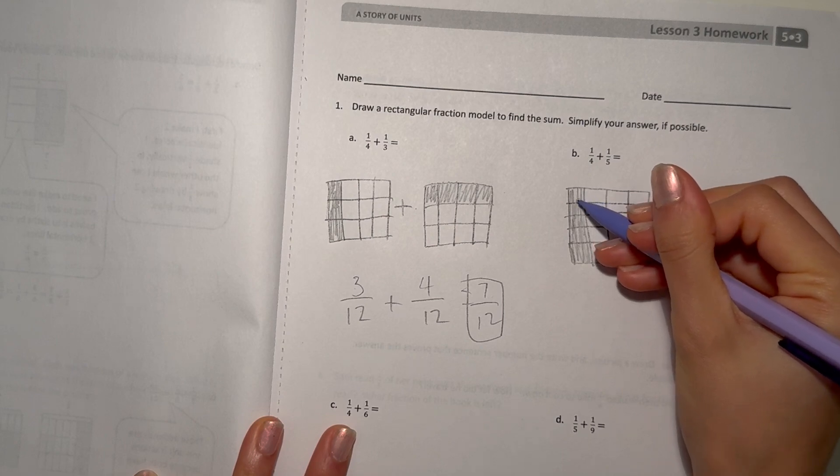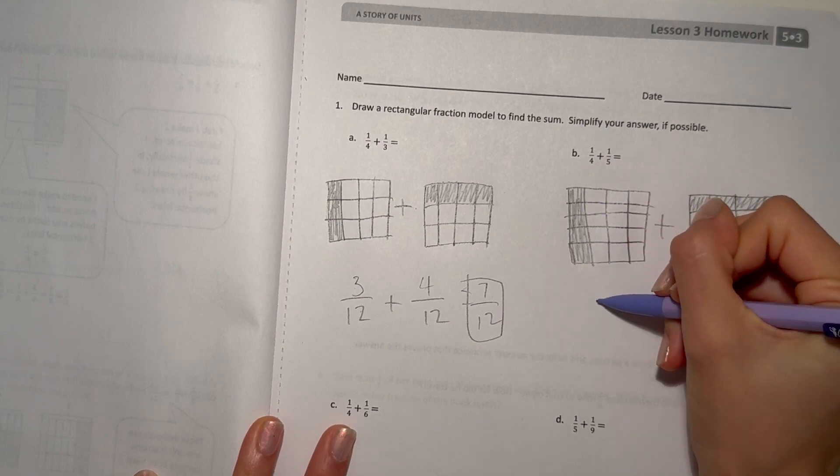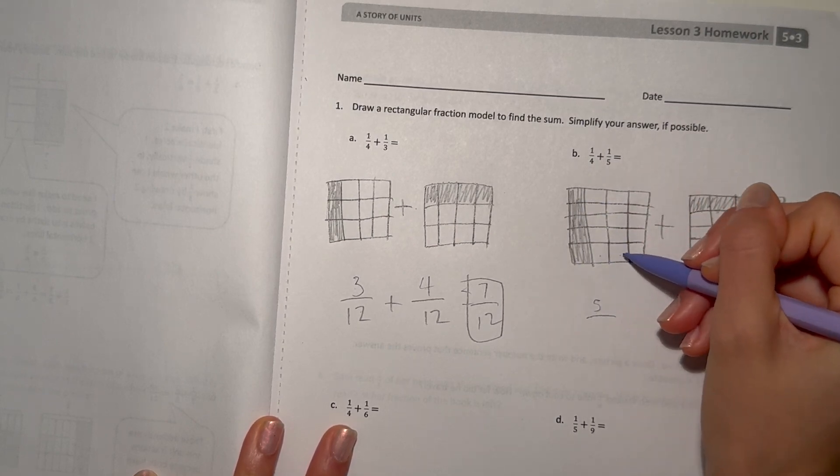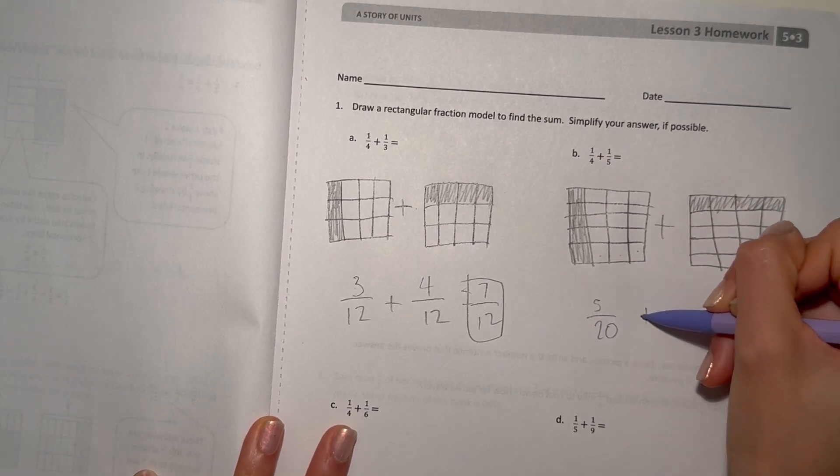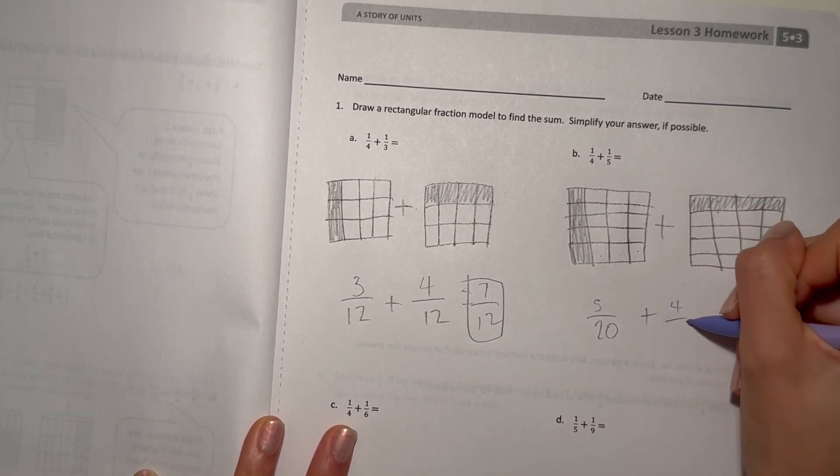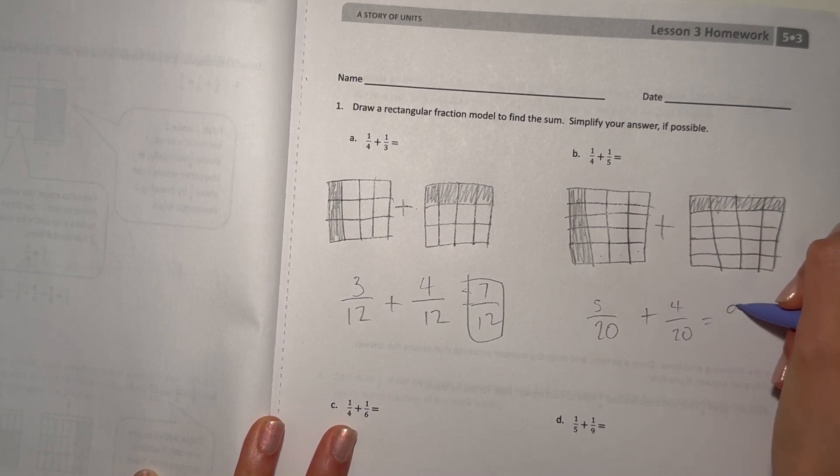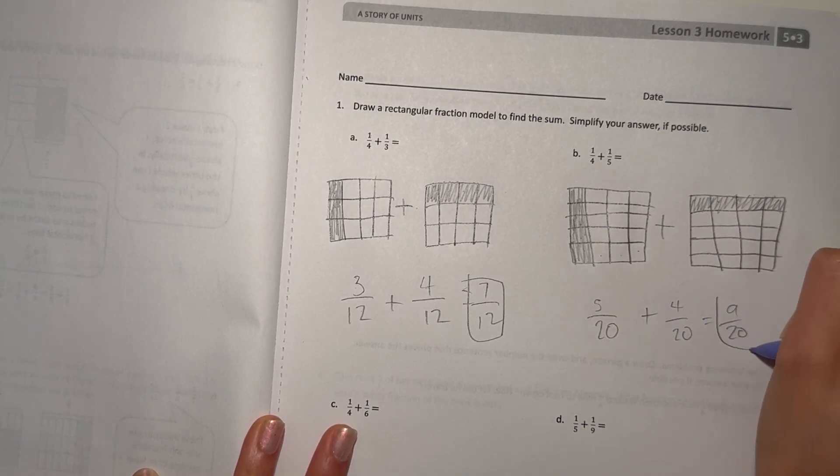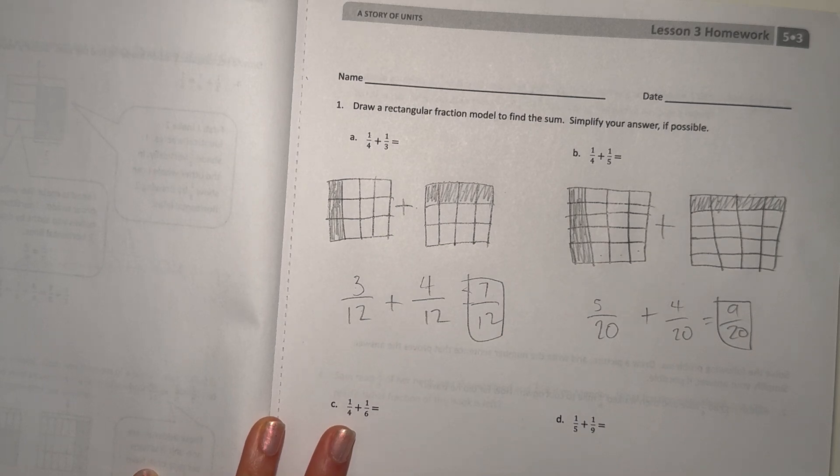And at the fifths, we draw, we split into four more. So, now we have one, two, three, four, five, out of five, ten, fifteen, twenty, plus one, two, three, four, out of twenty. And that'll give us nine over twenty, which can't be simplified any further.